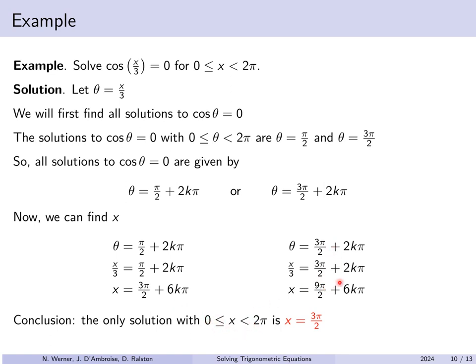From the second family, x/3 = 3π/2 + 2kπ gives x = 9π/2 + 6kπ. For k = 0, x = 9π/2, which is 4.5π — bigger than 2π. For k = −1, the result is negative. So no solution from this family lies in [0, 2π]. The only solution is x = 3π/2. Note that if the range were different — say [0, 4π] — different solutions might appear depending on the interval you're considering.